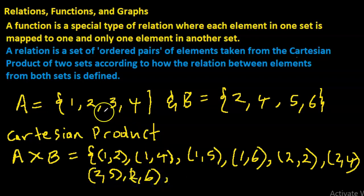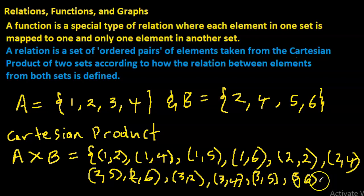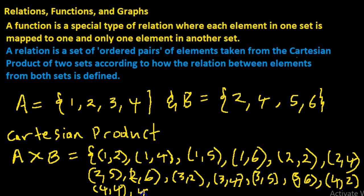Then you take three and do the same thing: three pairs with two, three pairs with four, three pairs with six. Then take four and pair it with each element in B — note that the first element in the pair is always from A. So four pairs with two, four pairs with four, four pairs with five, and four pairs with six.